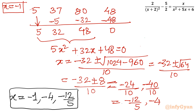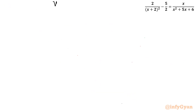Now I will verify all three solutions to check whether there are any extraneous solutions. None of the solutions is in our excluded list of -2 and -3, so let's verify each one.